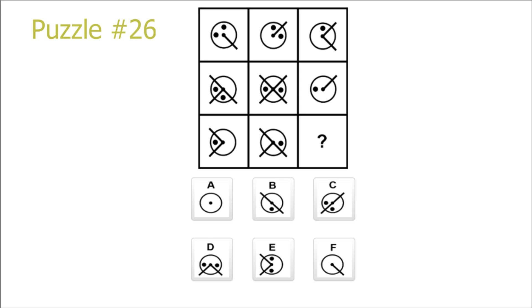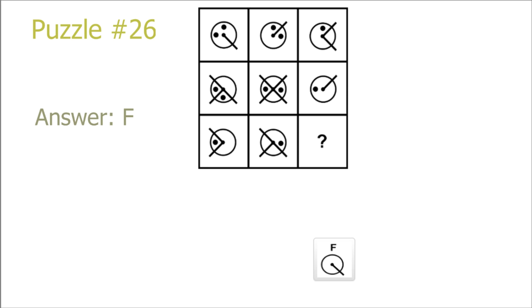Puzzle 26. If we look at the rows in this picture, we see that the last picture is just the intersection of the black dots in picture 1 and 2, and the addition of the lines in picture 1 and 2. If there are overlapping lines, they cancel each other out. We can also go by columns with some different rules, and we get picture F for both solutions.